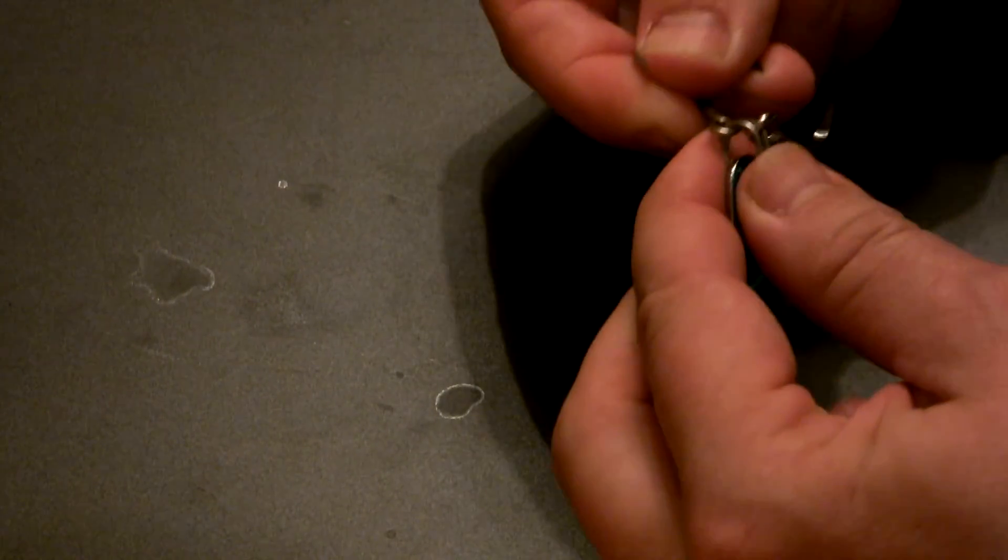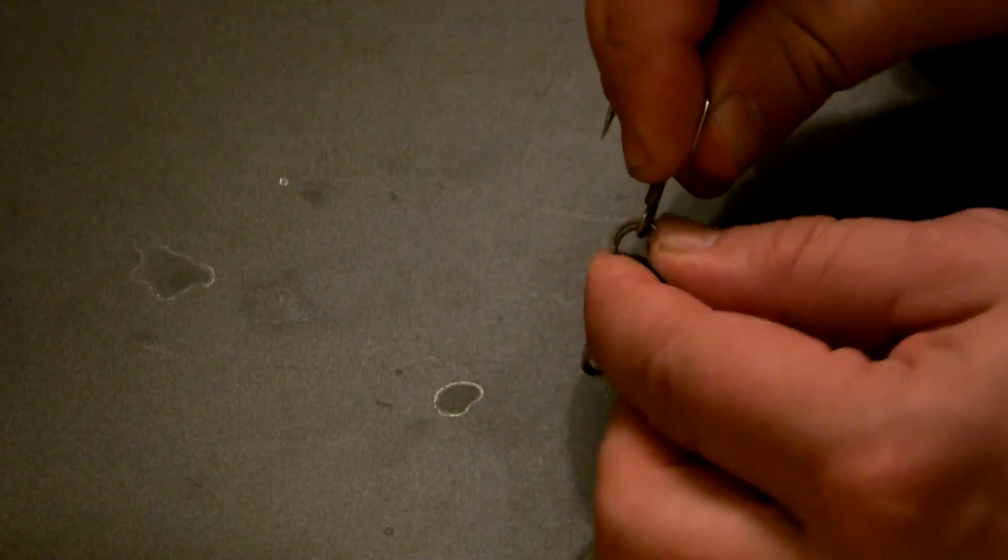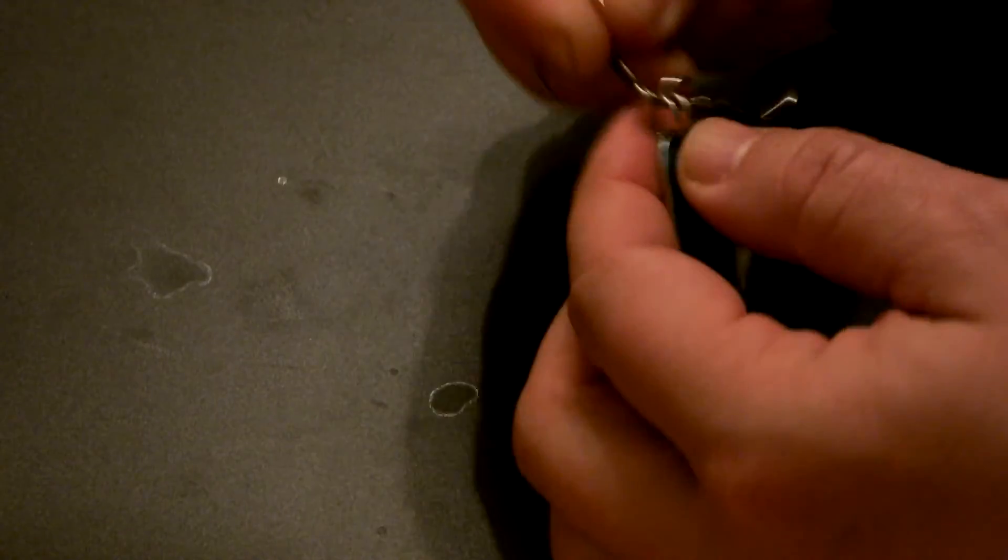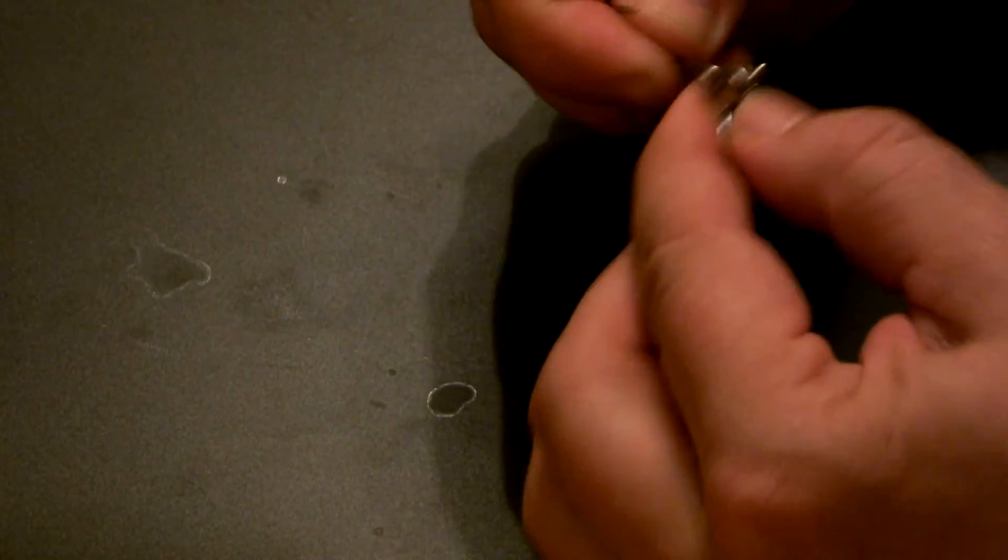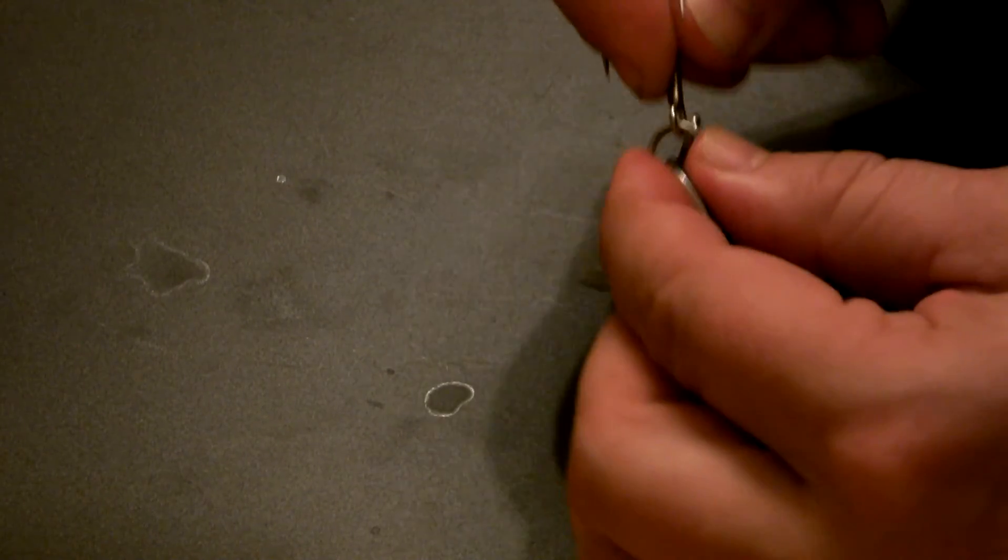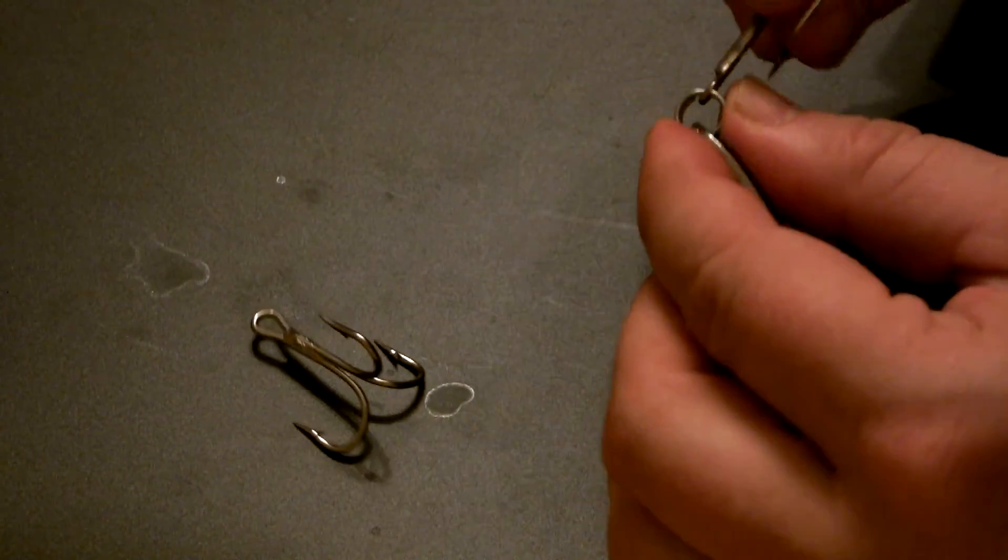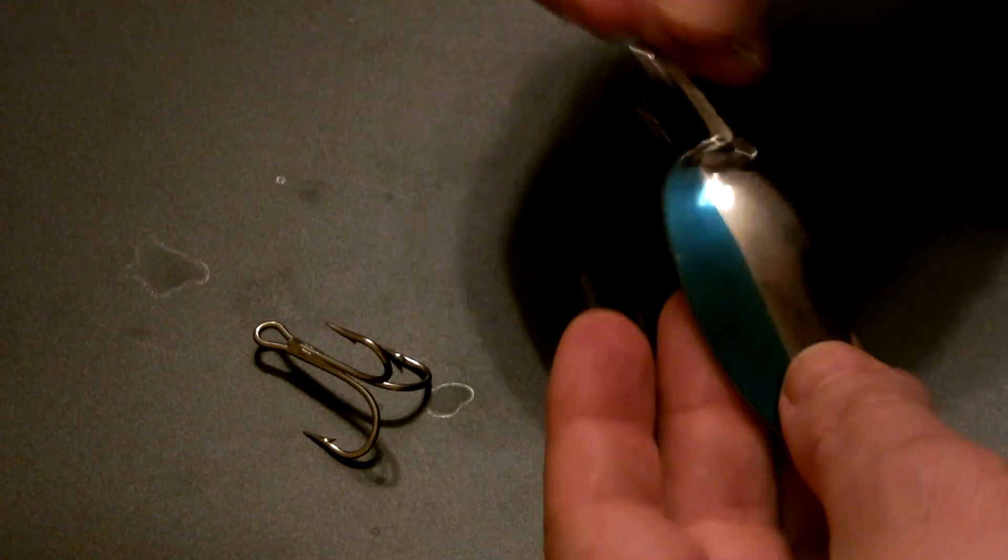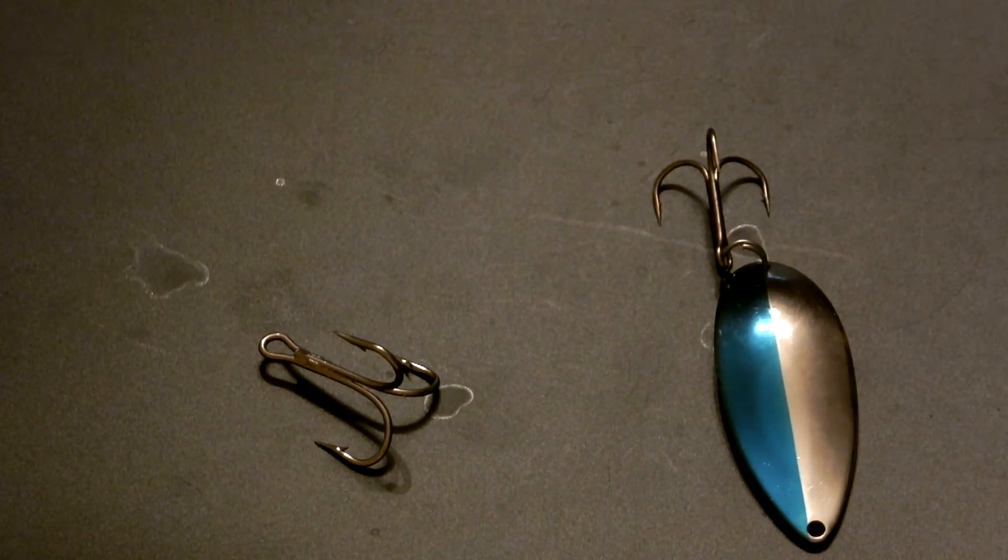push that new hook along, pushing the old hook as it goes, and what you're going to see at a certain point, when that old hook reaches the other end of that split ring, it's going to fall off, and this guy's going to magically pop on, and voila. In one motion, you've put a new hook on and taken the old one off.